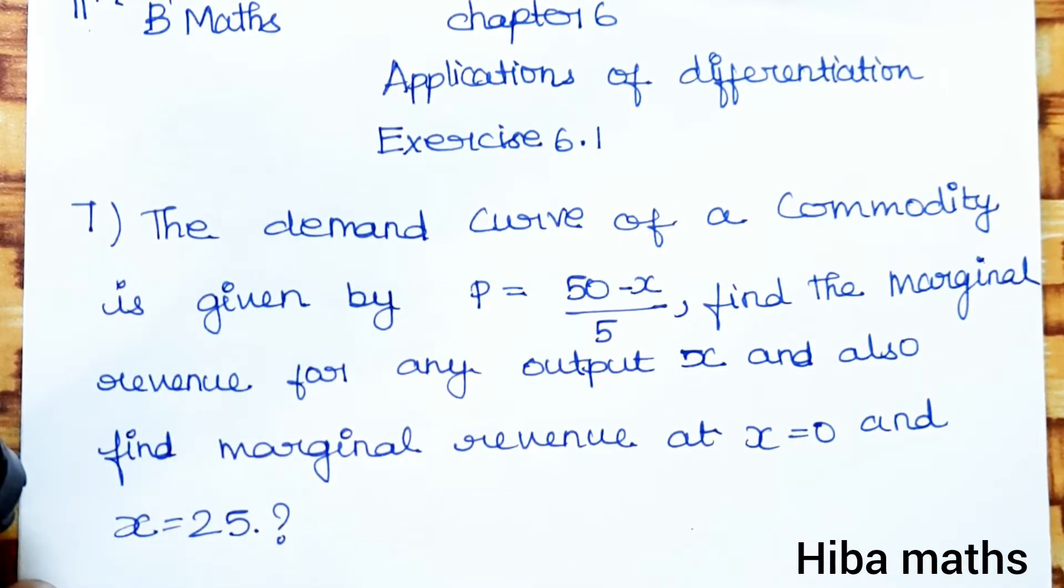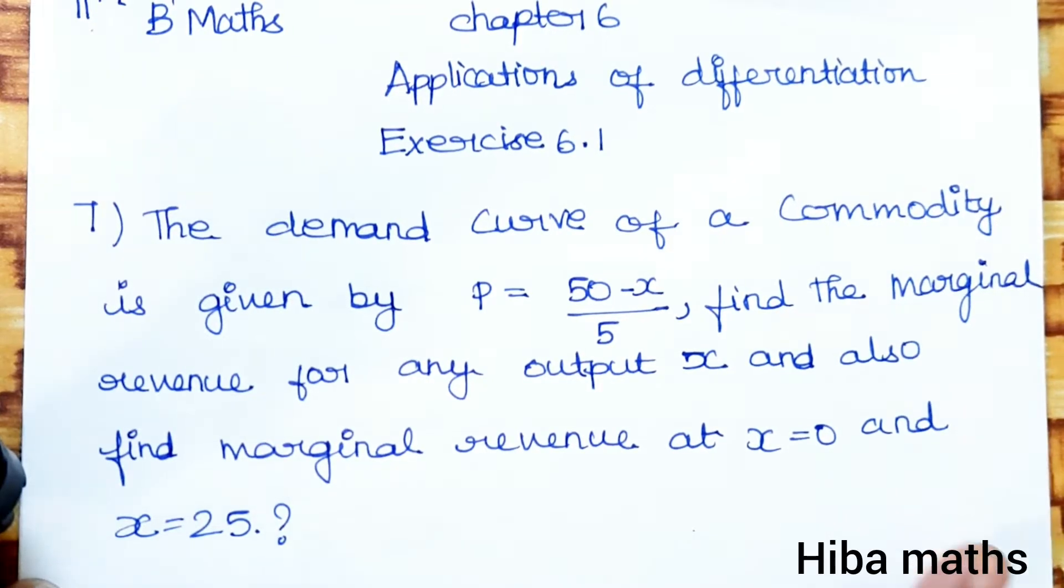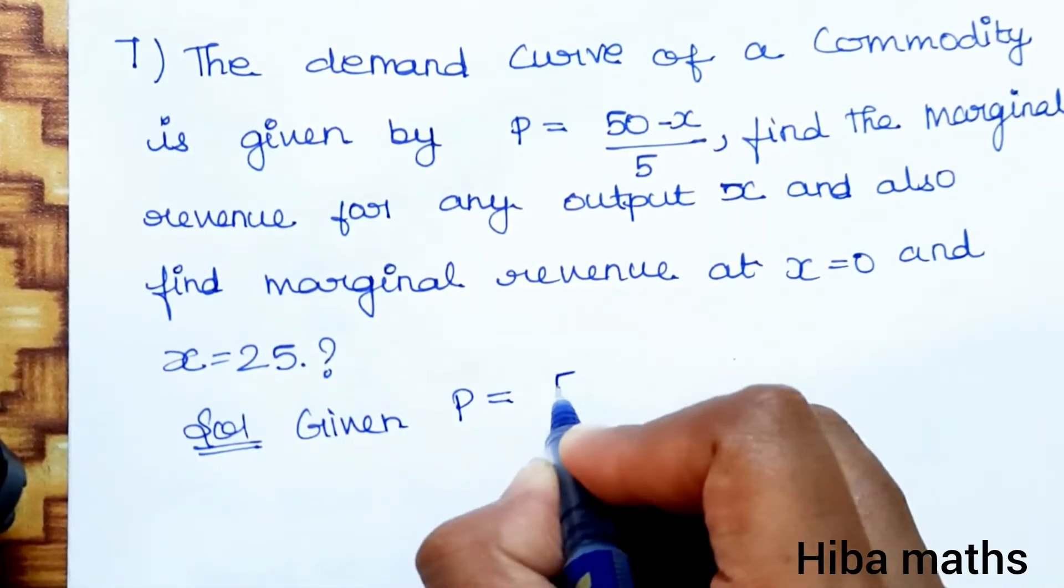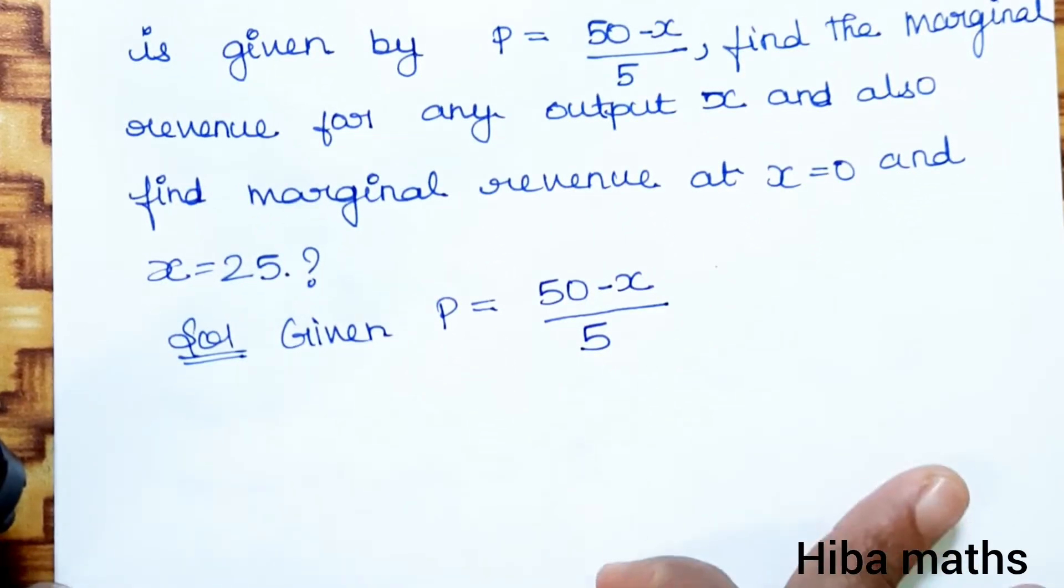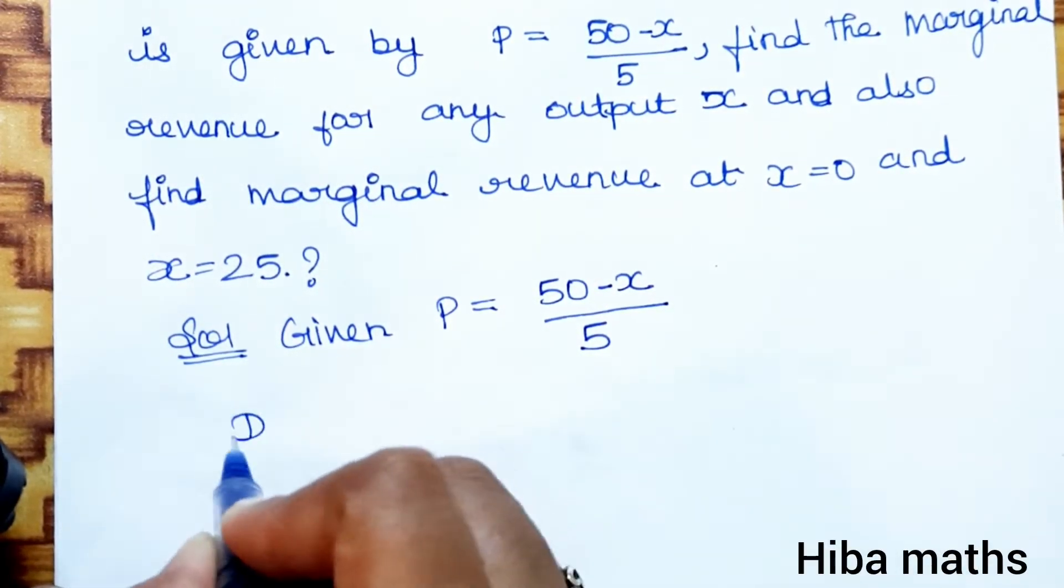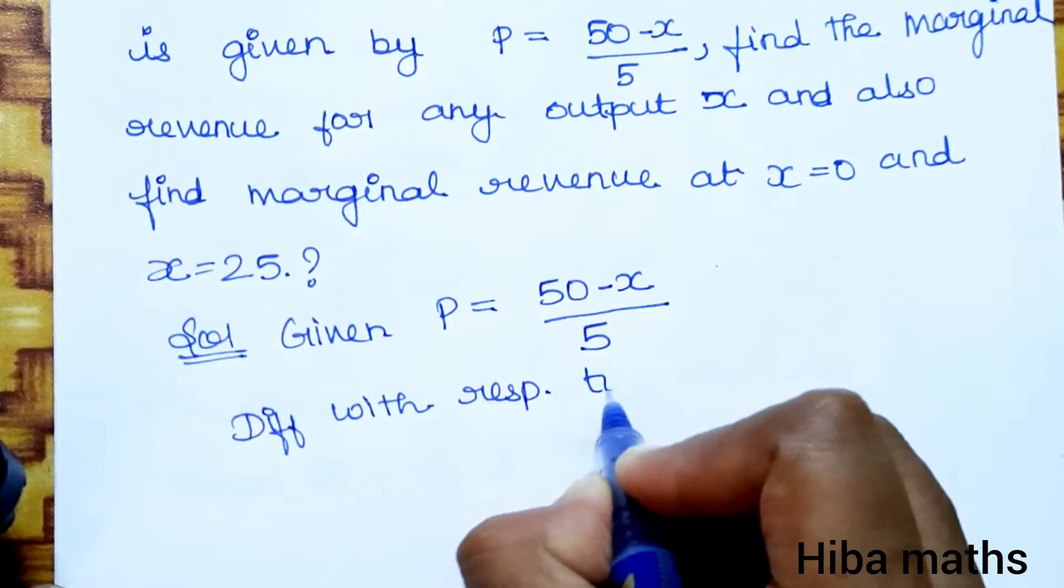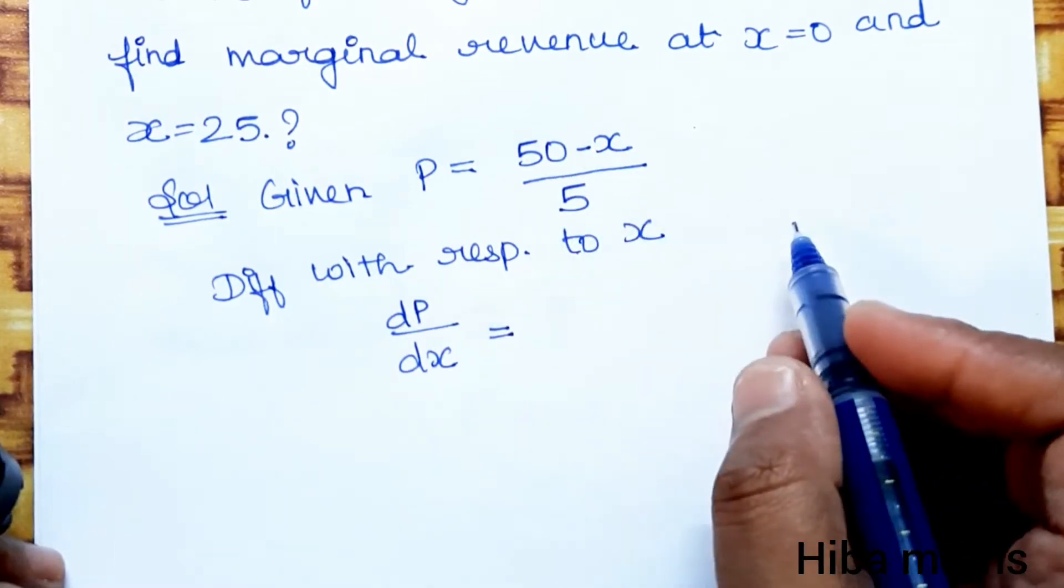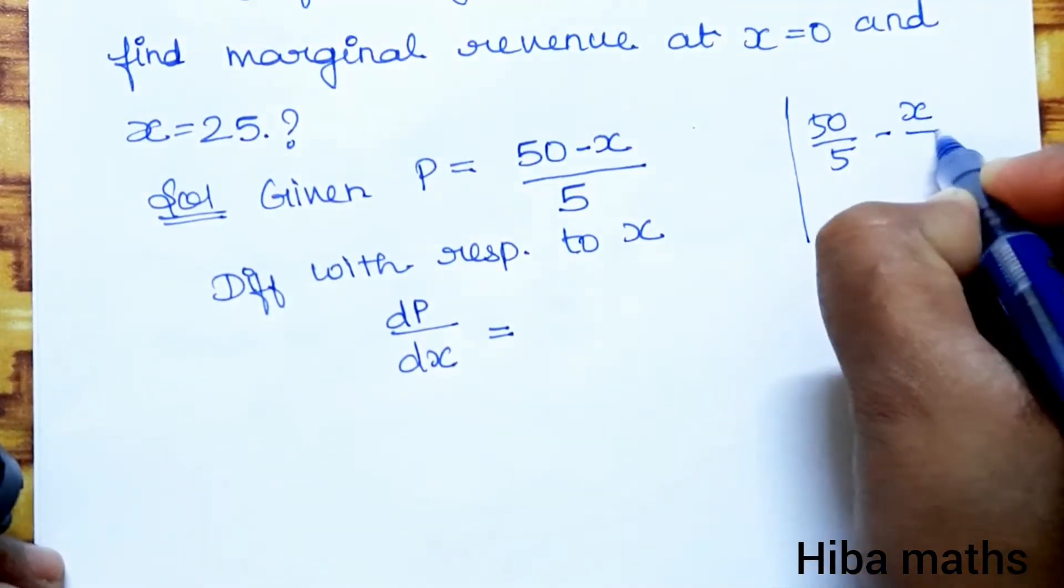First, to find the marginal revenue, we need to use elasticity of demand. Marginal revenue formula involves differentiation. In the solution, given P equals 50 minus x divided by 5, we can differentiate with respect to x. So dP/dx equals derivative of 50 minus x by 5.